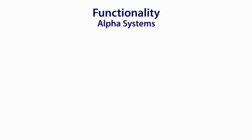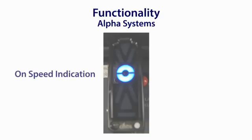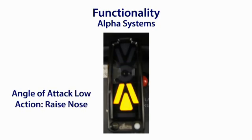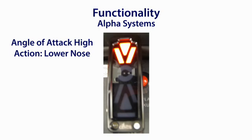The Alpha Systems device features an on-speed donut and two carats indicating what action must be taken to adjust the angle of attack. It can be calibrated from within the cockpit and gives a verbal warning when the aircraft is approaching the stall. This warning is usually in advance of the installed stall system, giving the pilot advanced warning for stall avoidance. The device has multiple audio warning sounds which can be selected by the pilot.